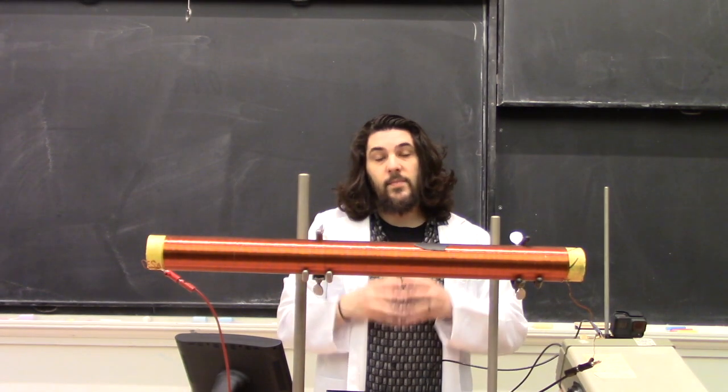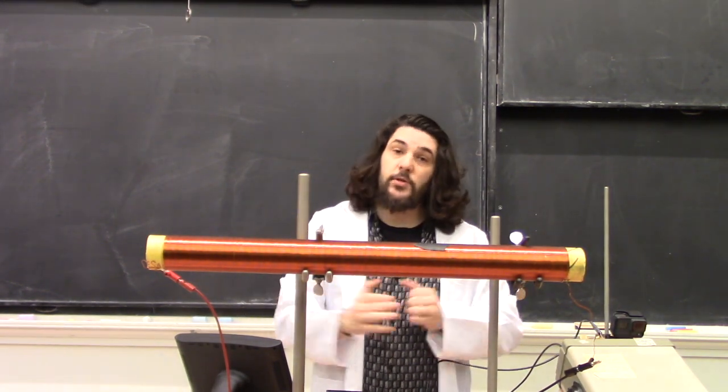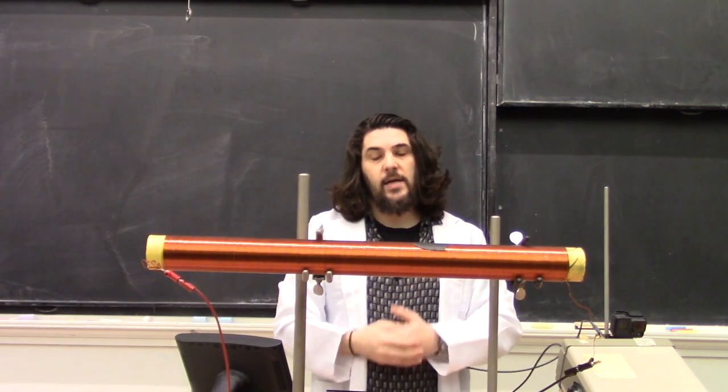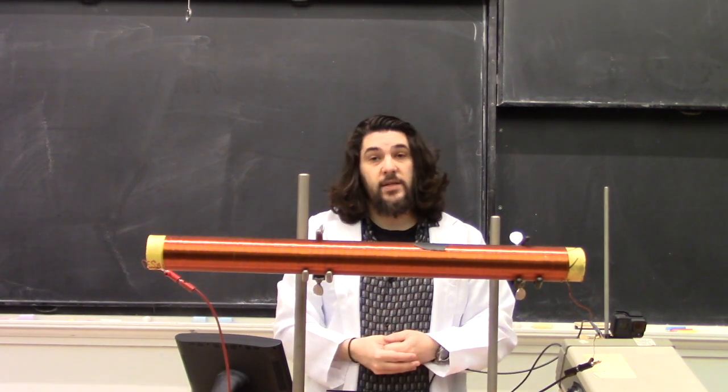According to theory, the magnetic field at the edge of a solenoid should be about half of the magnetic field inside. So this is an effective solenoid right here.